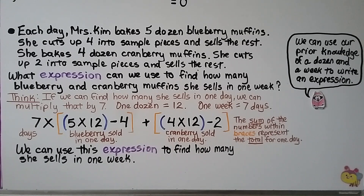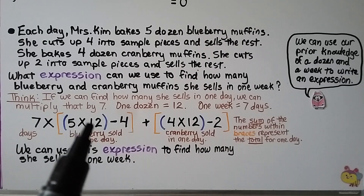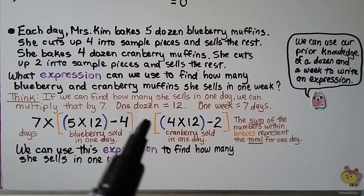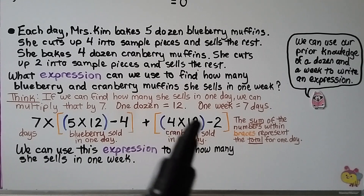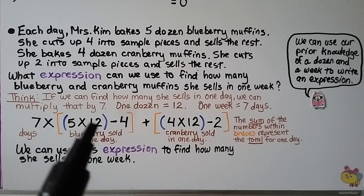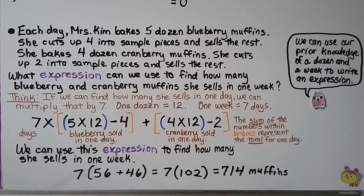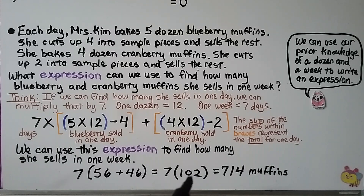Using mental math: 60 minus 4 is 56 blueberry muffins, plus 48 minus 2 is 46 cranberry muffins. Adding 56 plus 46 gives 102 muffins per day. Multiplying by 7 days gives 714 muffins in one week.